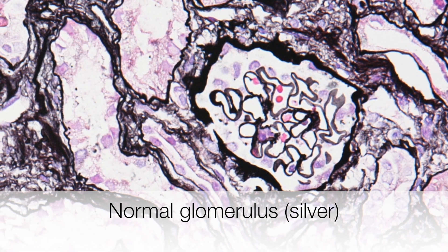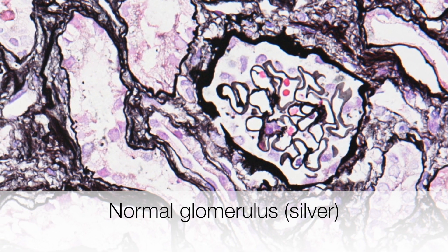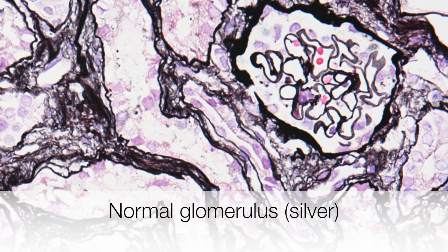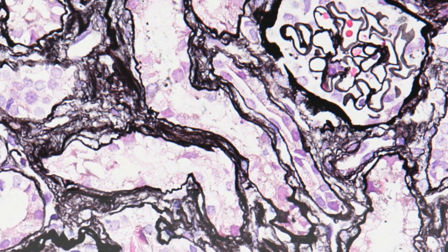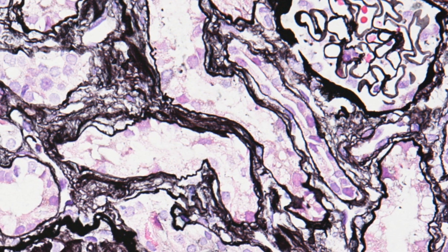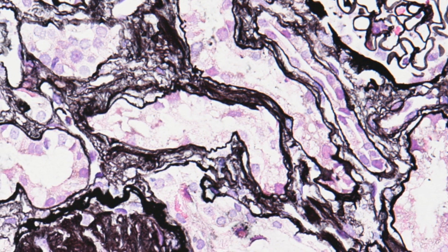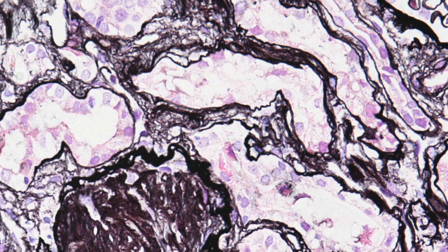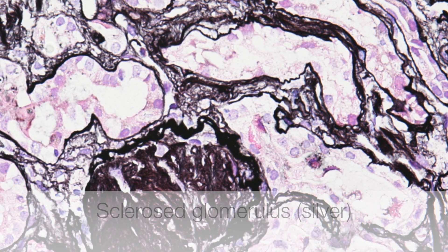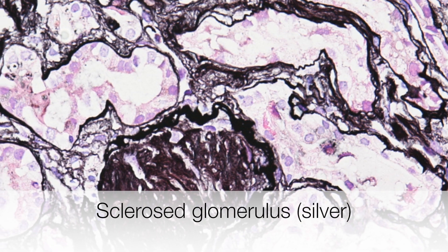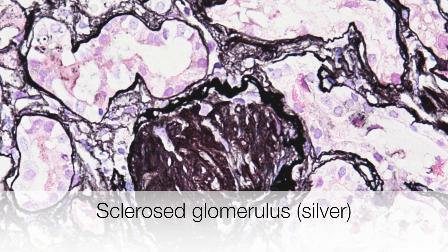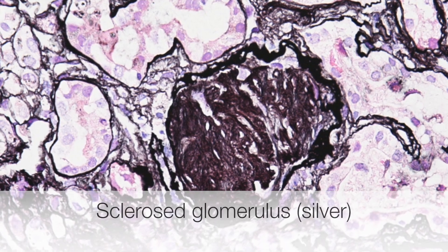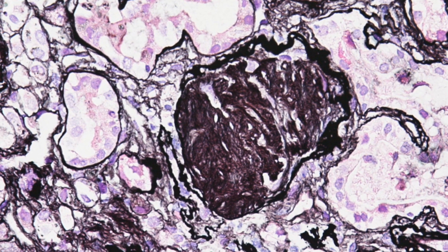This is a kidney biopsy. At the top right of the picture there is a normal glomerulus with a fine capillary network. As we move towards the bottom left of the picture you can see a glomerulus that has been destroyed by deposition of collagen. This is called glomerulosclerosis.